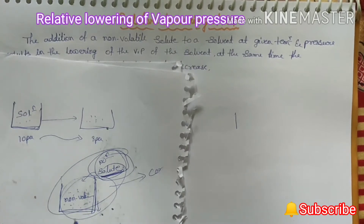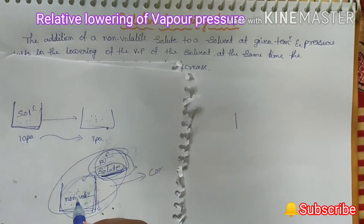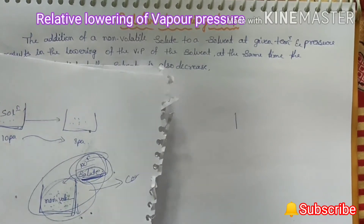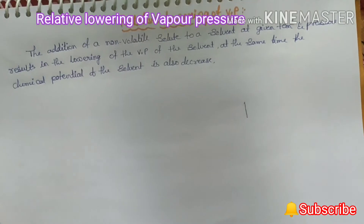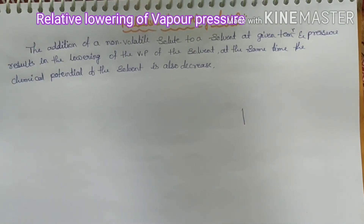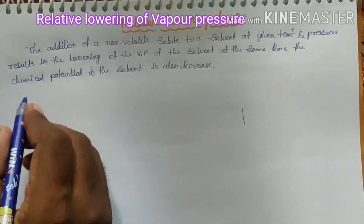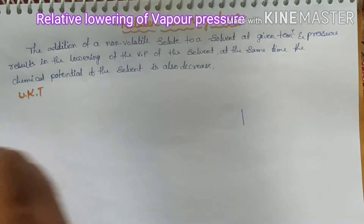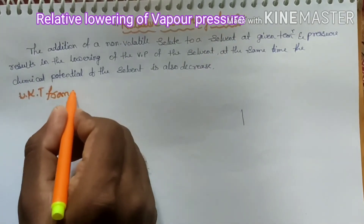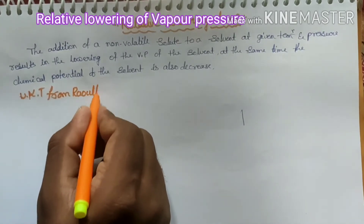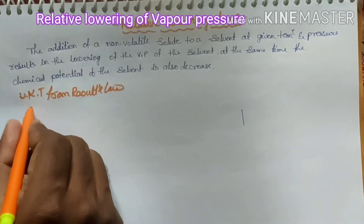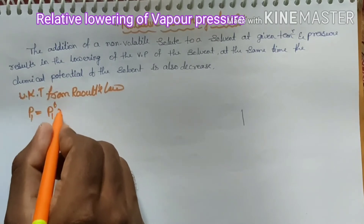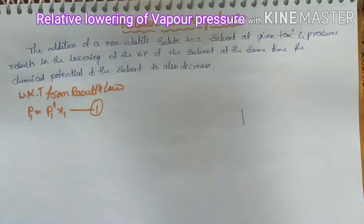In our solution, the solution depends upon the number of particles. After adding the number of solute particles, the vapor pressure of this solution will decrease. Therefore it is called a colligative property. Now let's go for the expression of relative lowering of vapor pressure. We know from Raoult's Law: p₁ = p₁⁰ × x₁. This is our first equation.